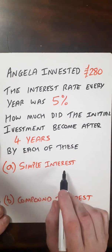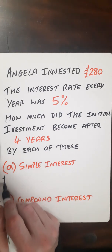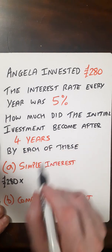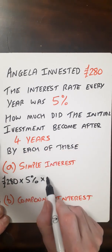So first of all, simple interest. Let's work out how much interest was received over the four years. For that, we take the initial amount, times it by the actual interest rate, which is 5%, and times that by the number of years.